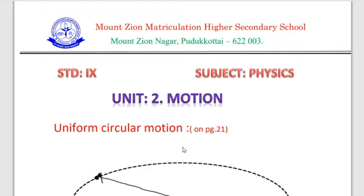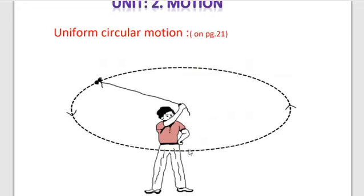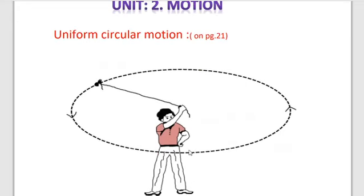First we will see about uniform circular motion. See the diagram. Take a piece of thread and tie a small piece of stone at one end. Rotate the stone to describe a circular path with constant speed by holding the thread at the other end. Now release the thread and let the stone go. Can you tell the direction in which the stone moves after it is released? At this point, if the stone is released, it moves along a straight line tangent.